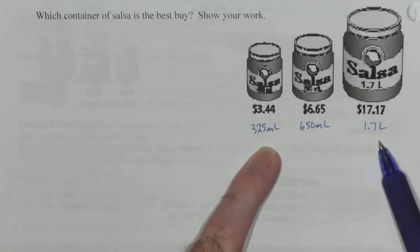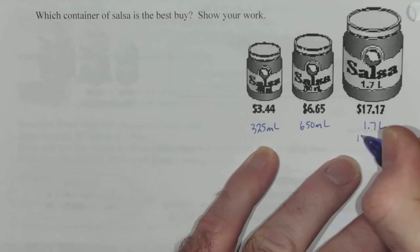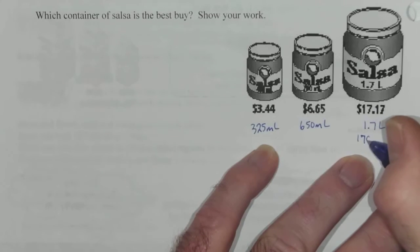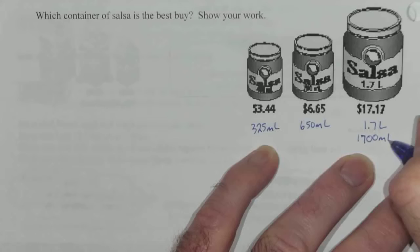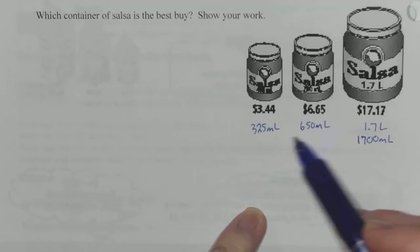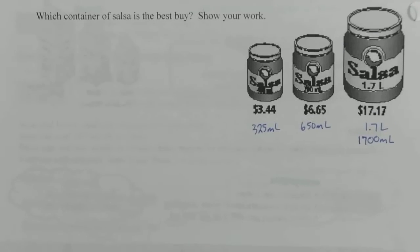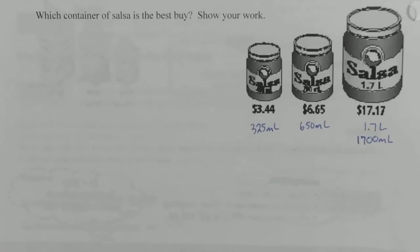First step is to recognize these are in milliliters but this one's in liters, so I'm going to convert by multiplying by a thousand, which gives us 1700 milliliters. Now I've got a quantity in milliliters for each. That's the first thing you want to look at so you're speaking the same language when you do all three calculations.